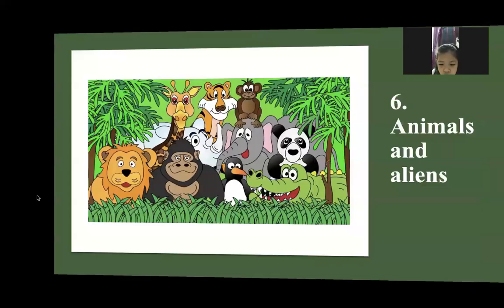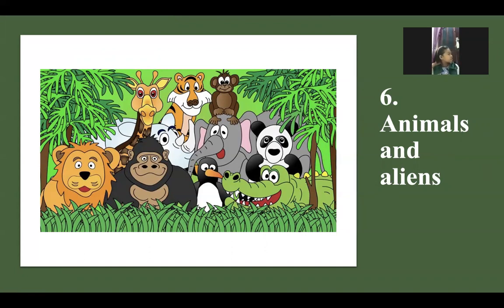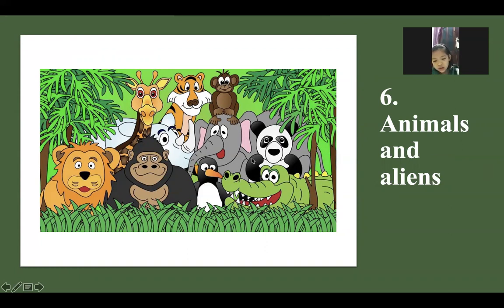Con gì nữa đây nè? Con màu cam ở góc bên này là con gì? Lion. Đúng rồi. Con cạnh con lion là con gì? Con khỉ đột tiếng Anh là gì nhỉ? Gorilla. Đúng rồi, gorilla. Con bên cạnh là con penguin này rồi. Con cá sấu. Crocodile. Panda. Đúng rồi, panda.